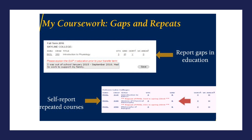The University of California also asks you to explain any gaps or repeats. For example, if you took a semester, a year, or multiple years off, you'll want to explain why you had a gap in your education. You can do so by typing it in the text box and clicking save. You'll also want to explain any repeats — for example, if you repeated a class that you didn't pass or you withdrew from.